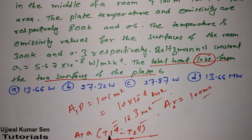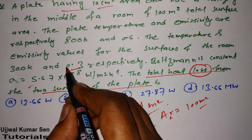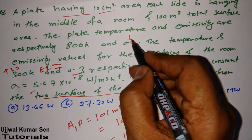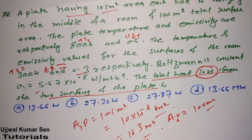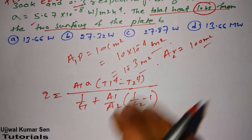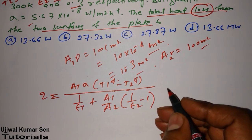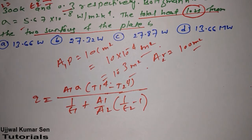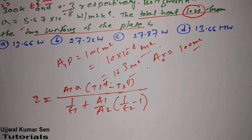We have A1 and A2. Now we need T1, T2, ε1, ε2, and σ — all values are given in the problem. Once we know all the required values, we just substitute them into the formula. Keep your concentration on the calculation so you don't make mistakes, because knowing the formula and understanding the question is useless if you make arithmetic errors.